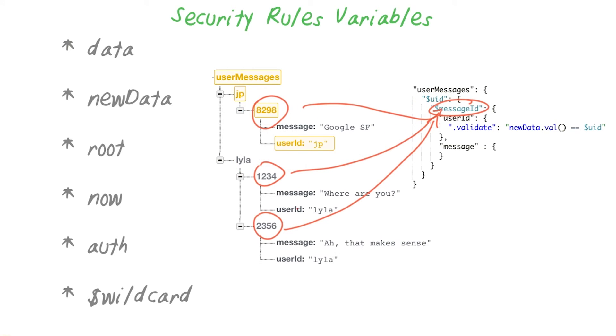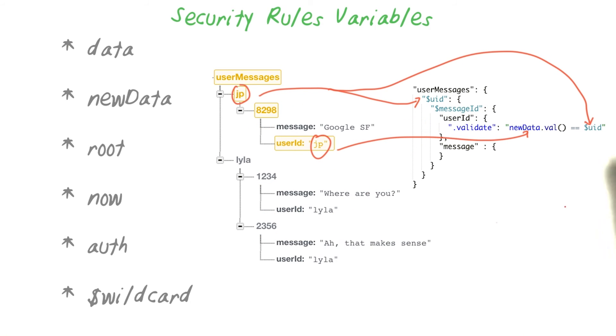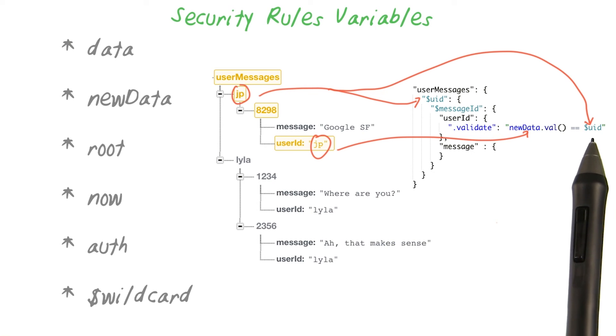They take on the value of the key that they match. So if you had a messaging app that had lists of messages a user posted, this would allow you to write rules that compare the dynamic key of an object with the value of one of its children. Here we're checking that the user ID property of a message matches the user ID it's listed under.